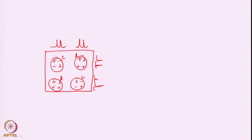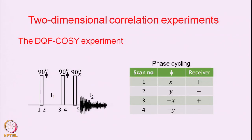The diagonal having a dispersive line shape is the main disadvantage of COSY, and to circumvent this problem a new idea emerged — that is what we are going to discuss today. It is called the two-dimensional double quantum filtered COSY experiment. This is a new pulse sequence which overcomes the difficulties of the COSY experiment, and it also introduces a new concept called phase cycling, which is much more general than what is indicated here for this particular experiment.